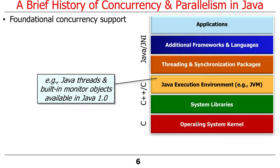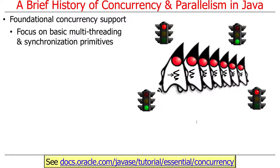Java has had support for concurrency since the very beginning. When Java came out in the mid-'90s, it already had support for threads. It also had support for built-in monitor objects, which we very quickly talked about. So that's been around for a long time.